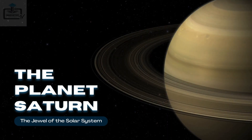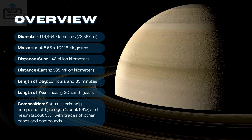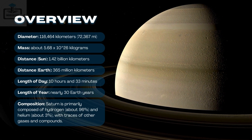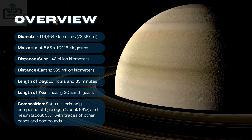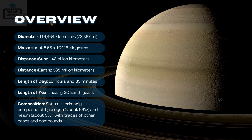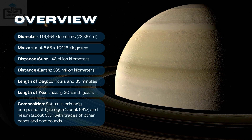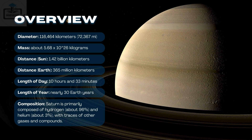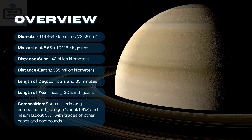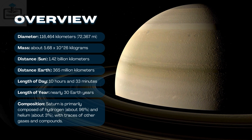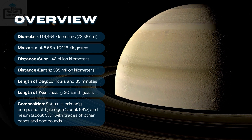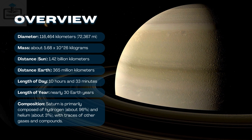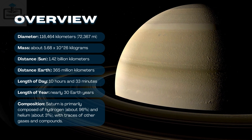6. The planet Saturn, the jewel of the solar system. Overview: Diameter — 116,464 kilometers (72,367 miles). Mass — about 5.68 × 10^26 kilograms. Distance from Sun — 1.42 billion kilometers. Distance from Earth — 365 million kilometers. Length of day — 10 hours and 33 minutes. Length of year — nearly 30 Earth years. Composition: Saturn is primarily composed of hydrogen, about 96%, and helium, about 3%, with traces of other gases and compounds.